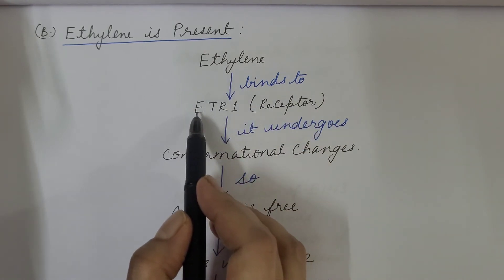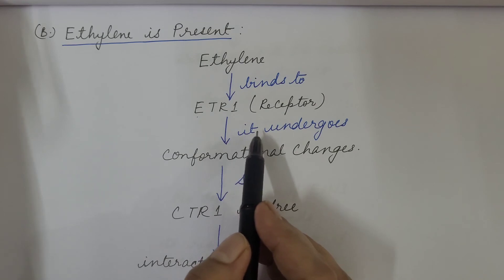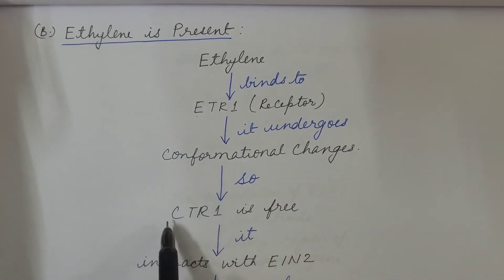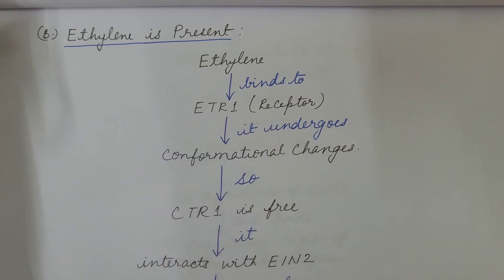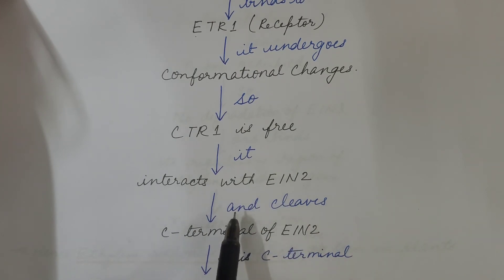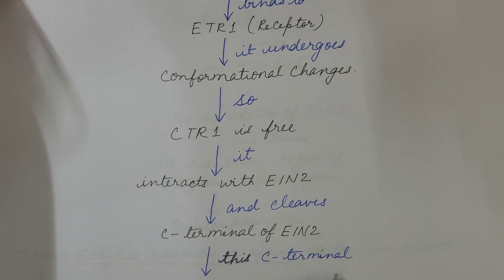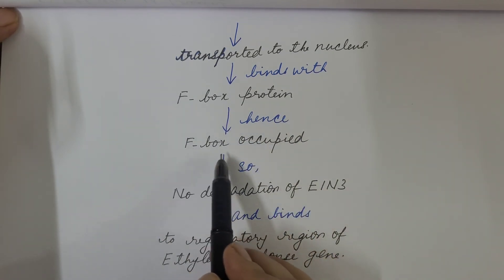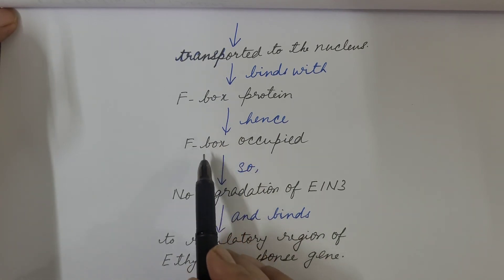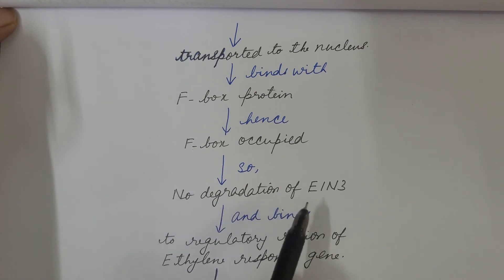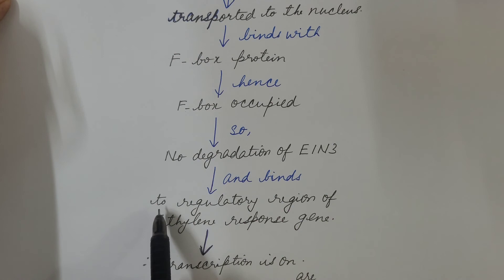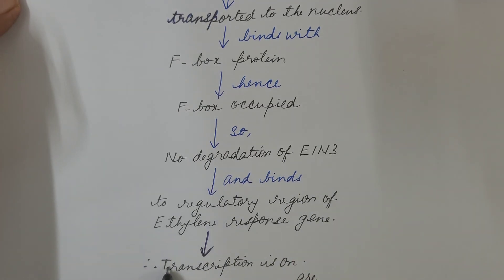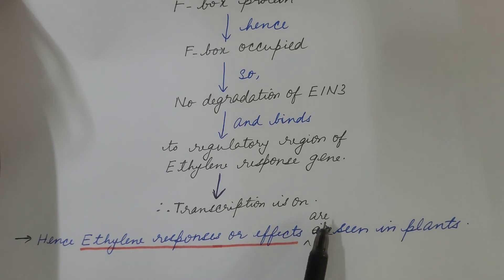Now the second situation: when ethylene is present. Ethylene binds to the receptor ETR1, resulting in a conformational change in ETR1. CTR1 is now free and does not bind with the cytosolic domain of ETR1. Instead, it interacts with EIN2 and cleaves the C-terminal of EIN2. This C-terminal is then transported to the nucleus and binds with the F-box protein, so the F-box protein is now occupied. Hence EIN3 does not bind with the F-box protein, and no degradation of EIN3 takes place. EIN3 then binds to the regulatory region of the ethylene response gene, transcription is on, and ethylene responses or effects are seen in plants.